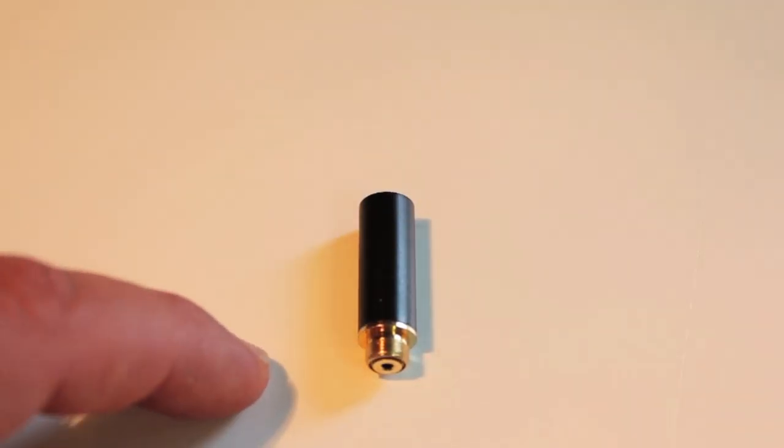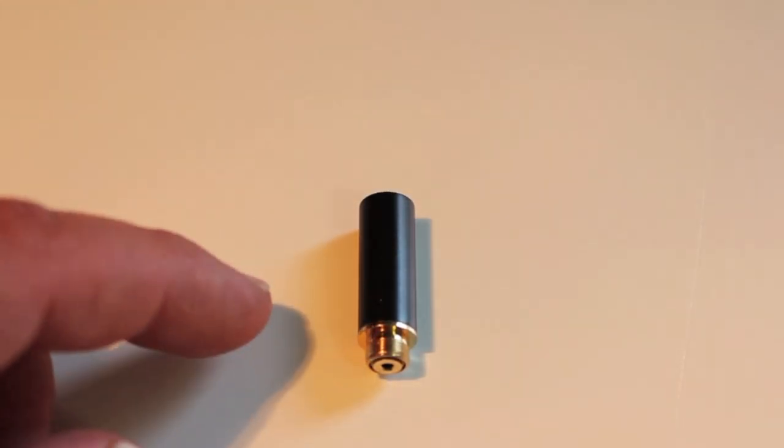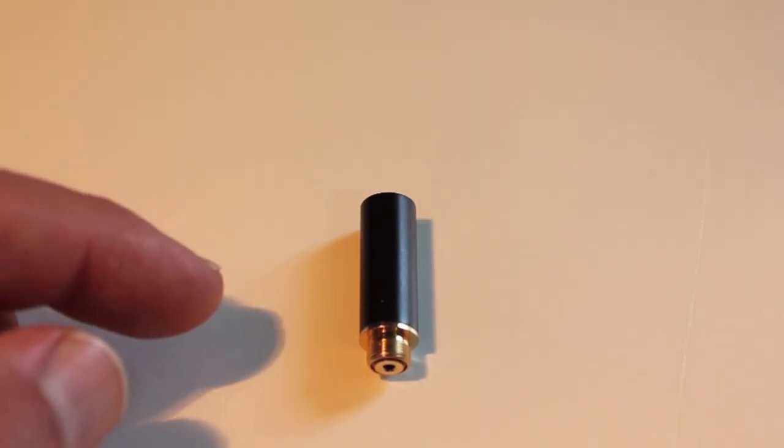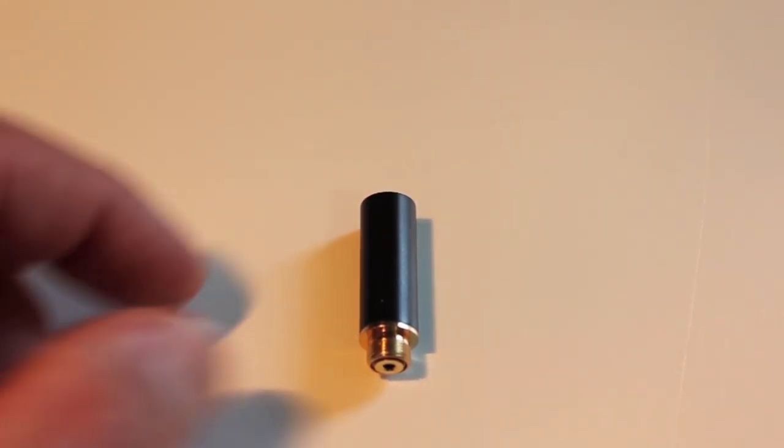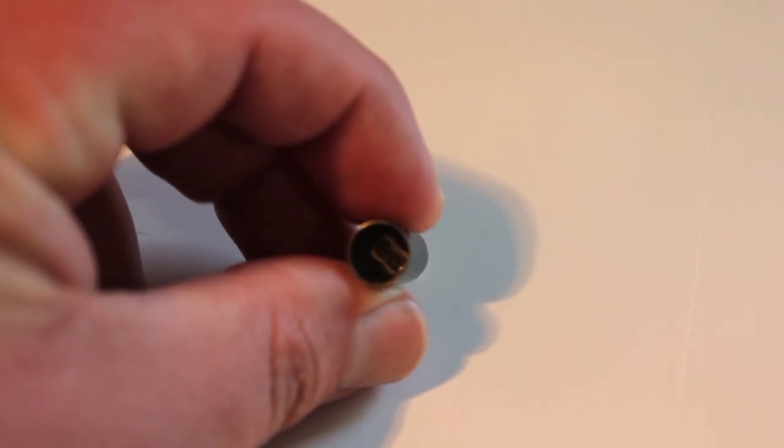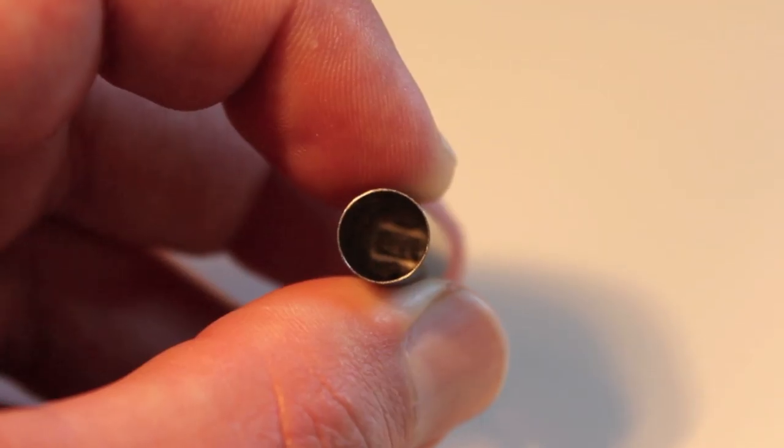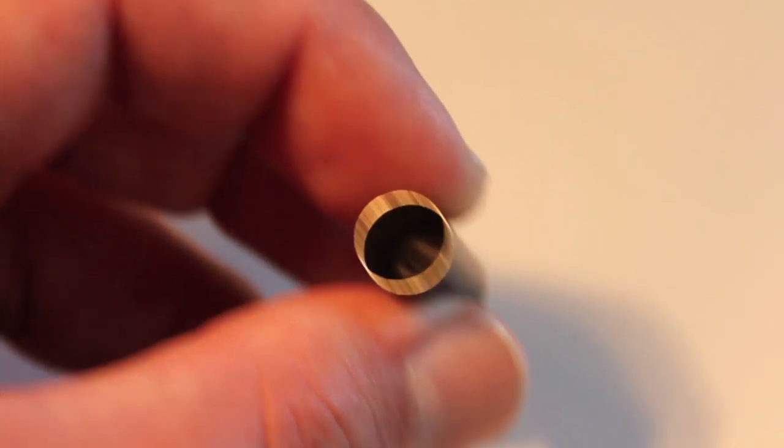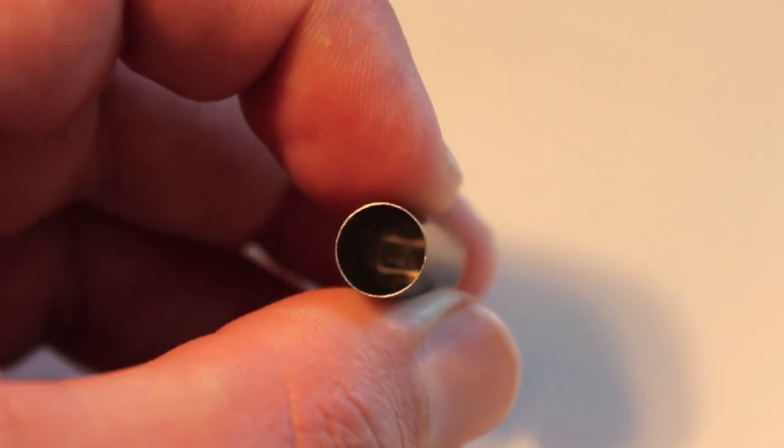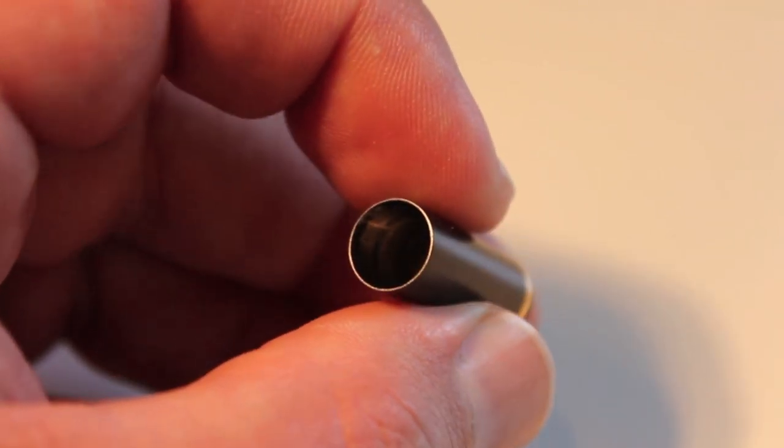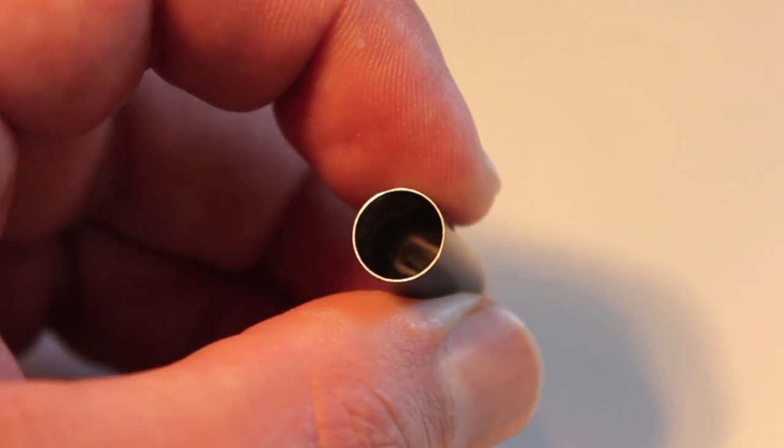This right here is a bridgeless atomizer. You can tell it kind of looks like a cartomizer but when you look inside it doesn't have any of the stuffing in it. Let me get a better close up view. Hopefully you can see in there, it's kind of hard with the lighting, but you can see that there's no stuffing in there like there was in the cartomizer. This is called a bridgeless atomizer.